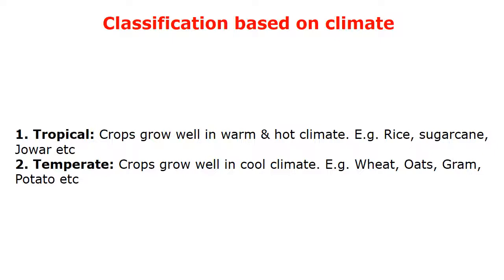Classification based on climate differentiates crops as tropical, subtropical, and temperate. Tropical crops grow well in warm and hot climates. India has both tropical and subtropical conditions; examples of tropical crops are Rice, Sugarcane, and Jowar. Temperate crops grow in cool climates, such as Wheat, Oat, Gram, and Potato.